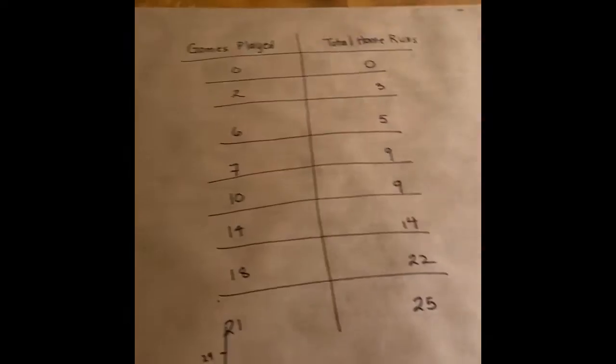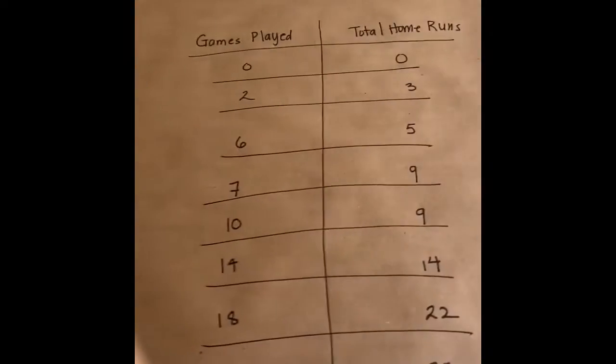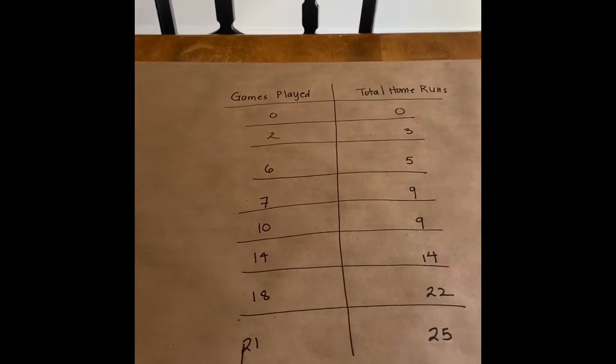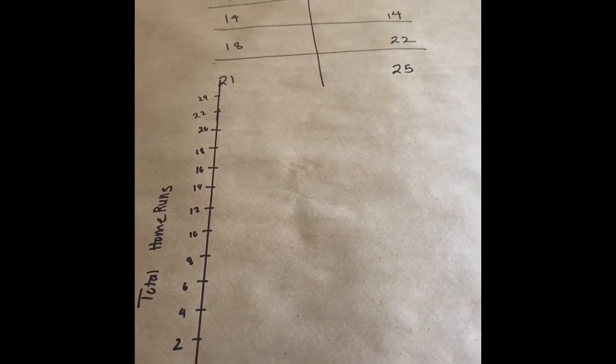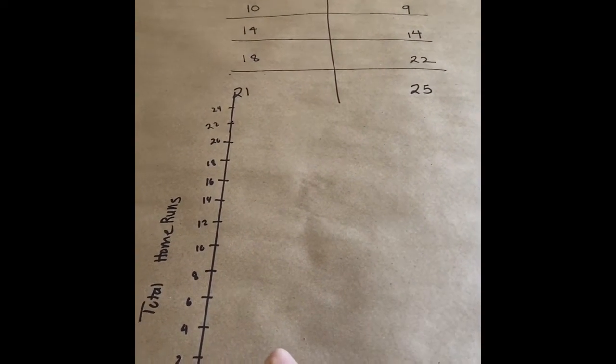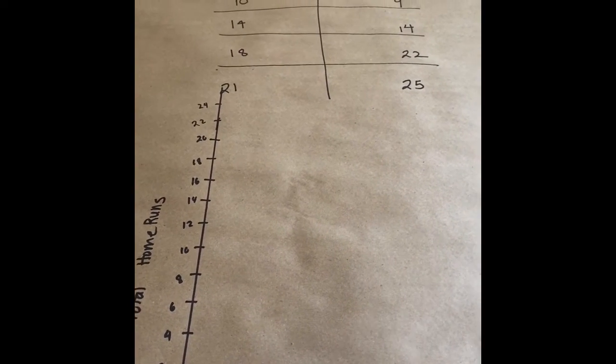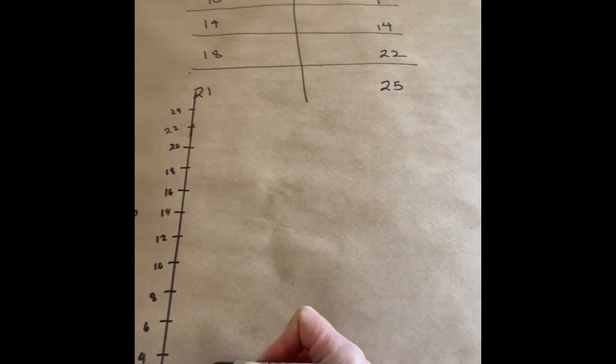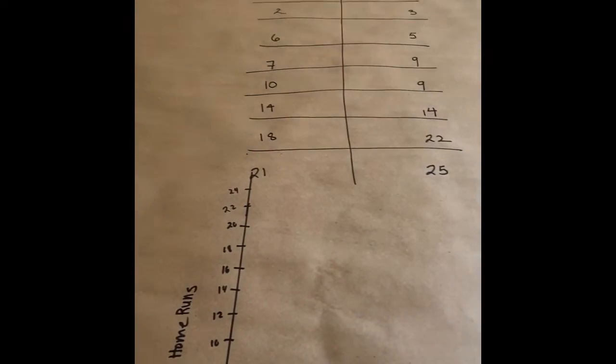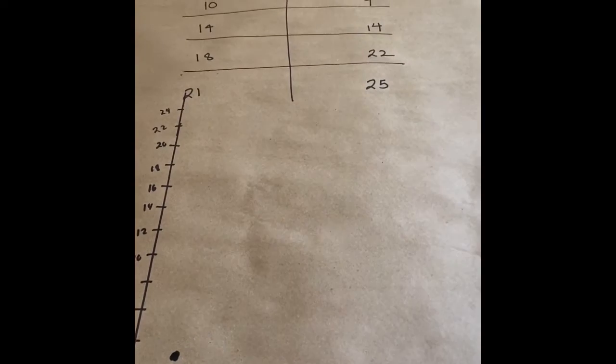So here I'm taking my lid off my Sharpie. If you play zero games, according to the table, you'll hit zero home runs. That makes total sense. If you play two games, the baseball player will hit three home runs, somewhere between two and four. If you play six games, I'm at six. This baseball player hit five home runs.